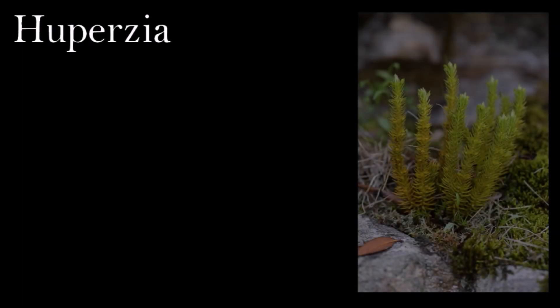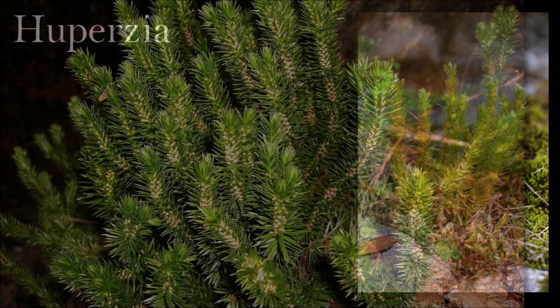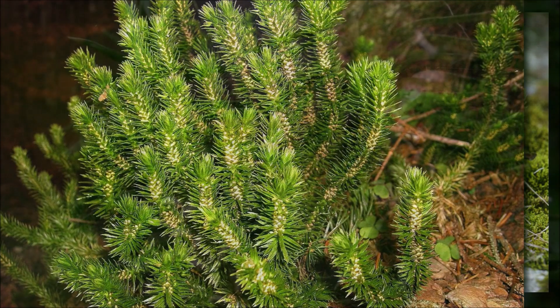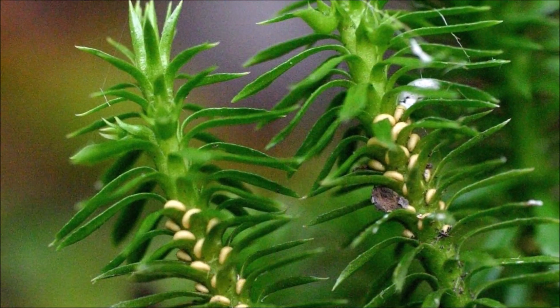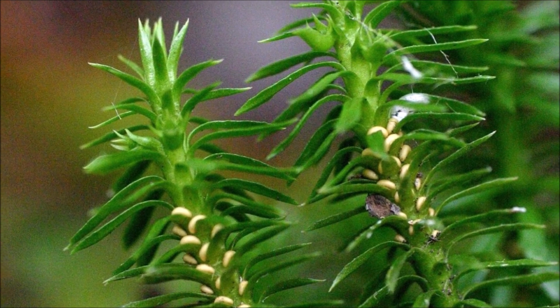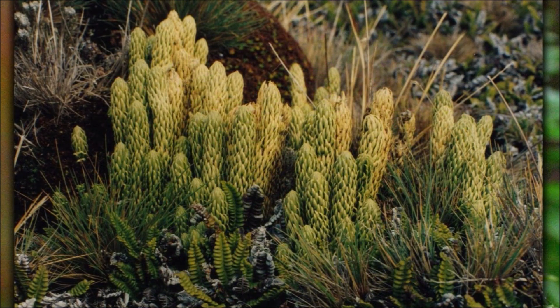Huperzia is a simple club moss and perhaps one of the most primitive vascular plants living today. It has small spirally arranged leaves, and instead of cones like other club mosses, Huperzia has zones of spore-producing structures in the leaf axils. Nearly 400 species exist in temperate and tropical regions worldwide. Huperzia represents a lineage of living plants that stretches back to Devonian genera such as Asteroxylon. The living species of Huperzia probably evolved, diversified, and spread during the Paleogene and Neogene.